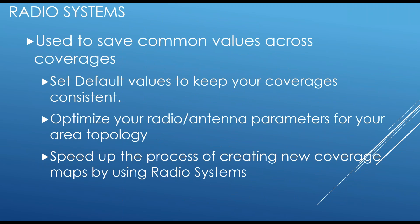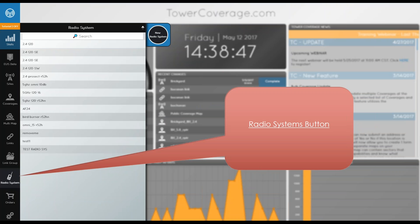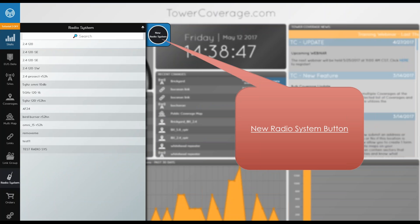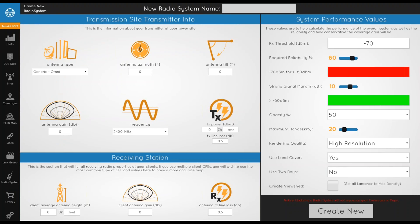Next we have radio systems. A radio system is simply used to save common values across multiple coverages. All values are actually saved on the actual coverage, so modifying a coverage to use a radio system updates the coverage variables accordingly. This allows you to create many coverages very quickly by simply adding a new coverage, selecting a name and site, and selecting the proper radio system. All other variables are automatically filled for you. The radio system screen has transmitter site information, receiving station information, and system performance variables.